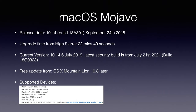Now we've moved on to macOS Mojave, released as version 10.14 on September 24th, 2018. The upgrade time from High Sierra was 22 minutes and 49 seconds. The latest version is 10.14.6, released July 2019, with the latest security build from July 21st, 2021. It's a free update from Mountain Lion 10.8 or later. Device support was updated: MacBook early 2015 or newer, MacBook Air mid-2012 or newer, MacBook Pro mid-2012 or newer, Mac mini 2012 or newer, iMac 2012 or newer, iMac Pro 2017, and Mac Pro late 2013 onwards. Mid-2010 and mid-2012 Mac Pros are supported but need a Metal-capable graphics card.